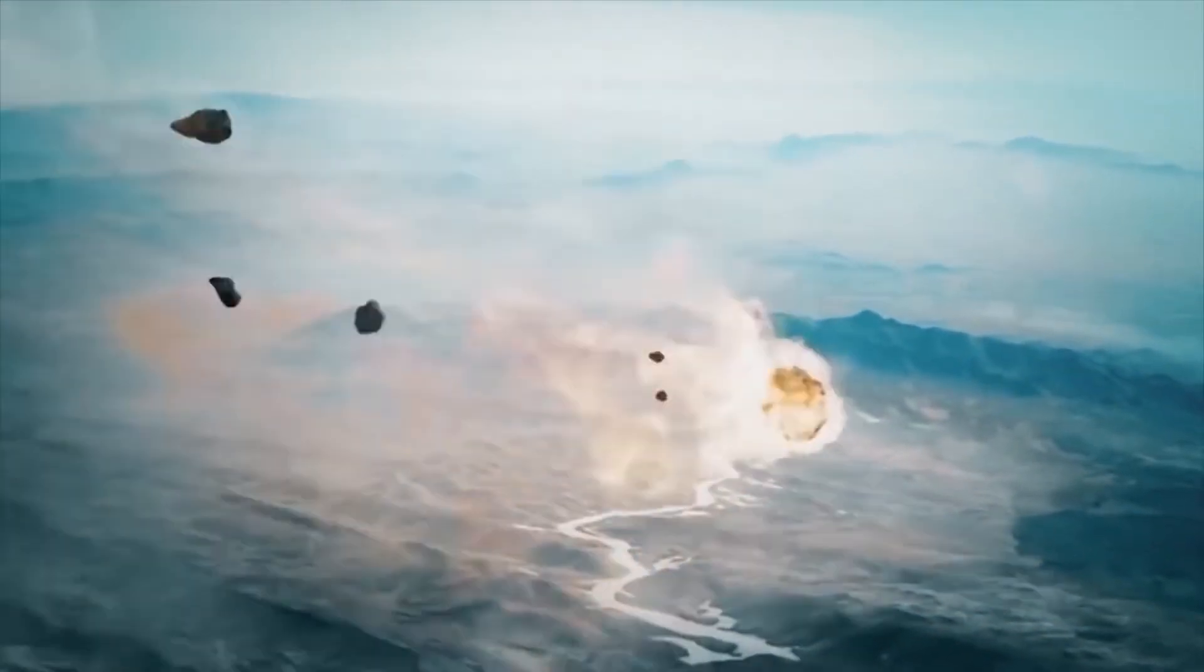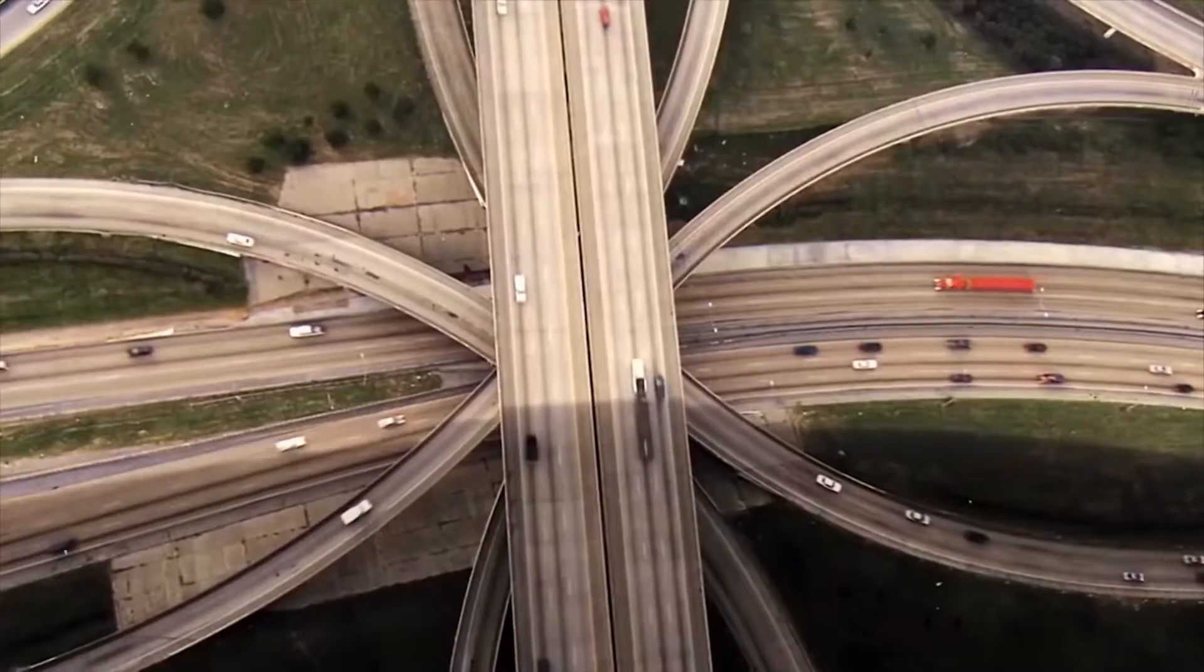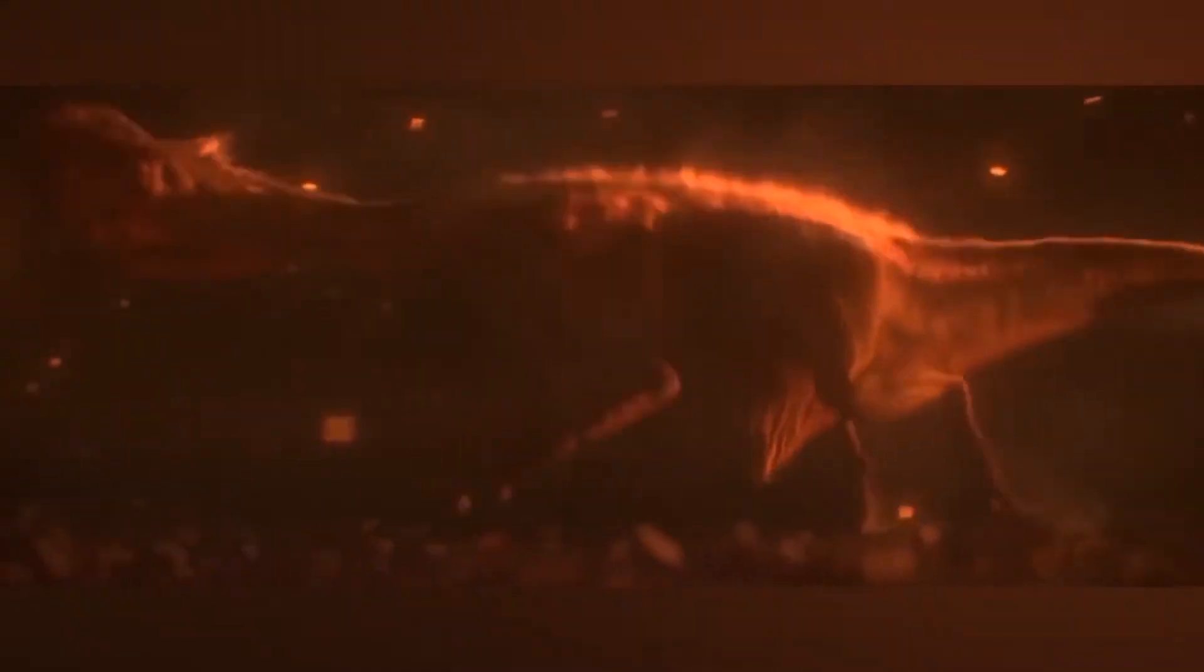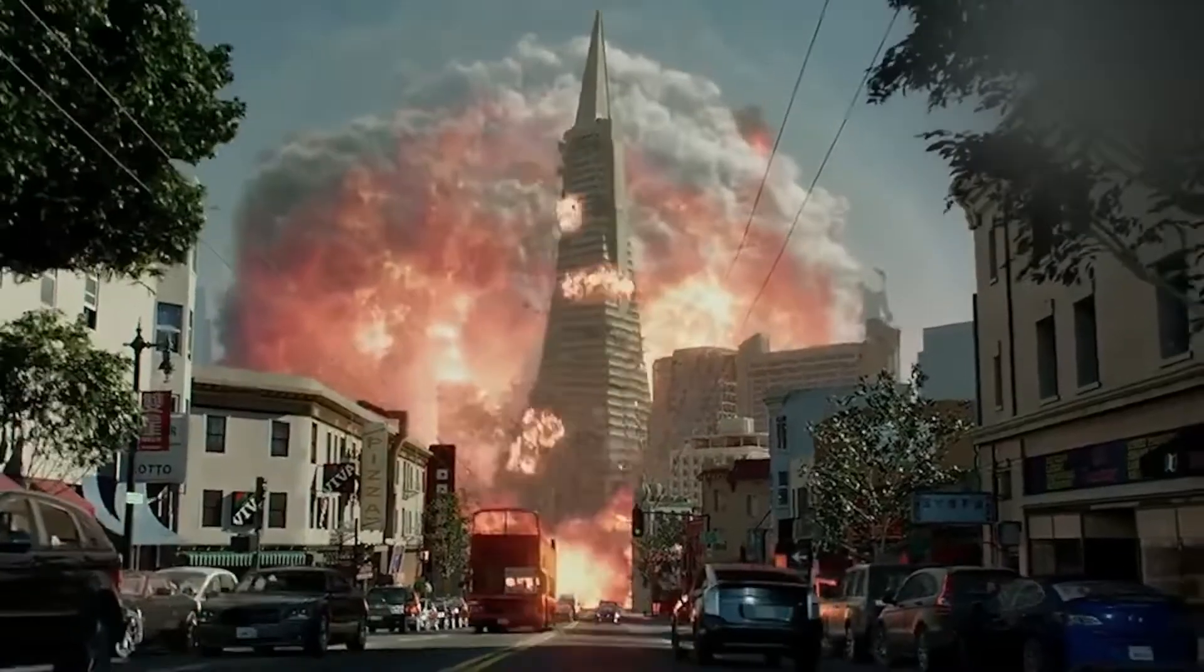If an asteroid were to be hurled from the belt in the direction of Earth, a large enough impact would cause a lot of change to life on our planet. Like when an asteroid impact brought the age of dinosaurs to an end. The damage from the impact would be enormous, but it wouldn't be the only form of disaster due to the asteroid.